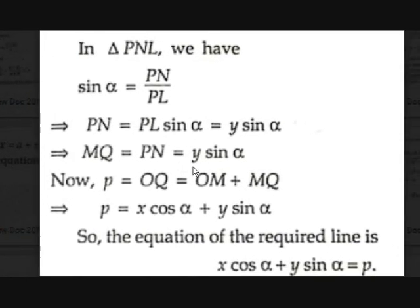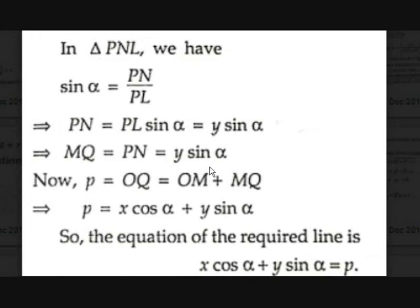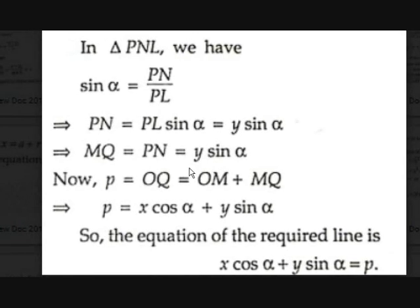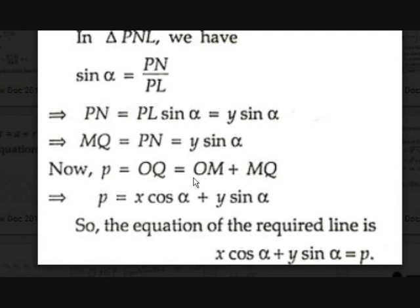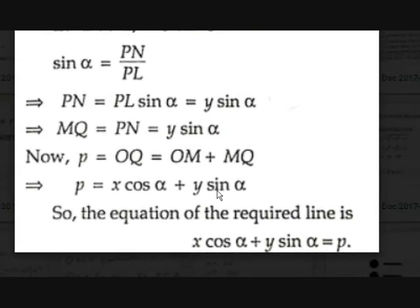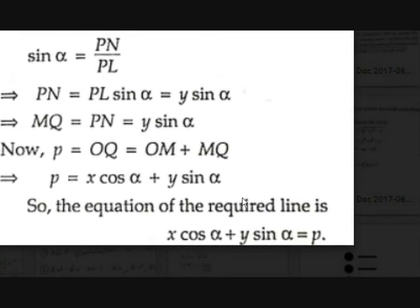Now we can find the length OQ. OQ = OM + MQ = p. So p = x·cosα + y·sinα, because OM is x·cosα and MQ is y·sinα. Therefore the equation is x·cosα + y·sinα = p. This is how we prove that formula.